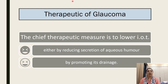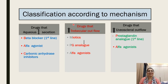The chief therapeutic measures for glaucoma are to lower intraocular tension either by reducing secretion of aqueous humor or by promoting its drainage. Classified by mechanism of action, drugs that reduce aqueous humor secretion include beta blockers, alpha agonists, and carbonic anhydrase inhibitors.